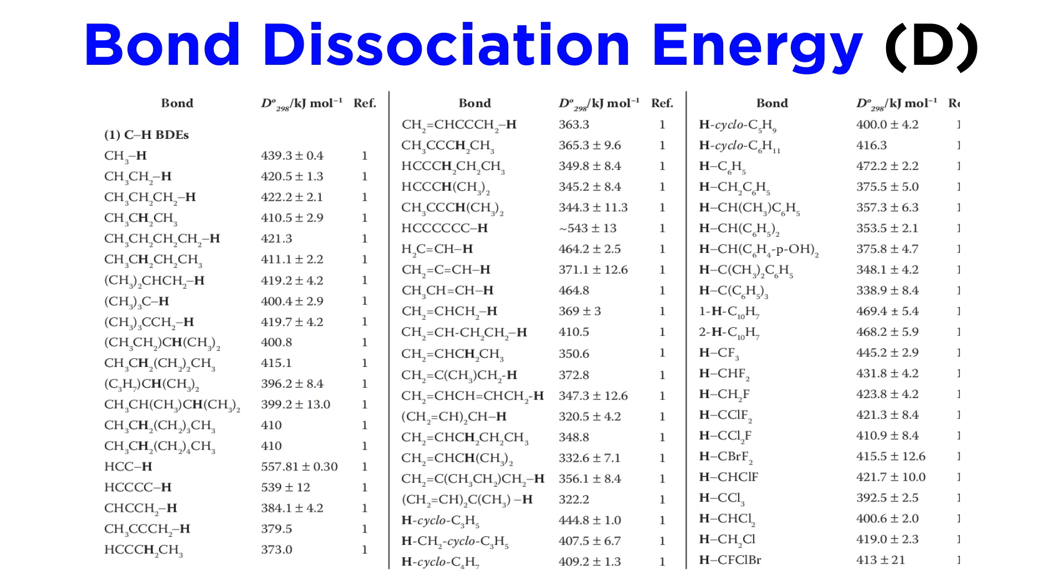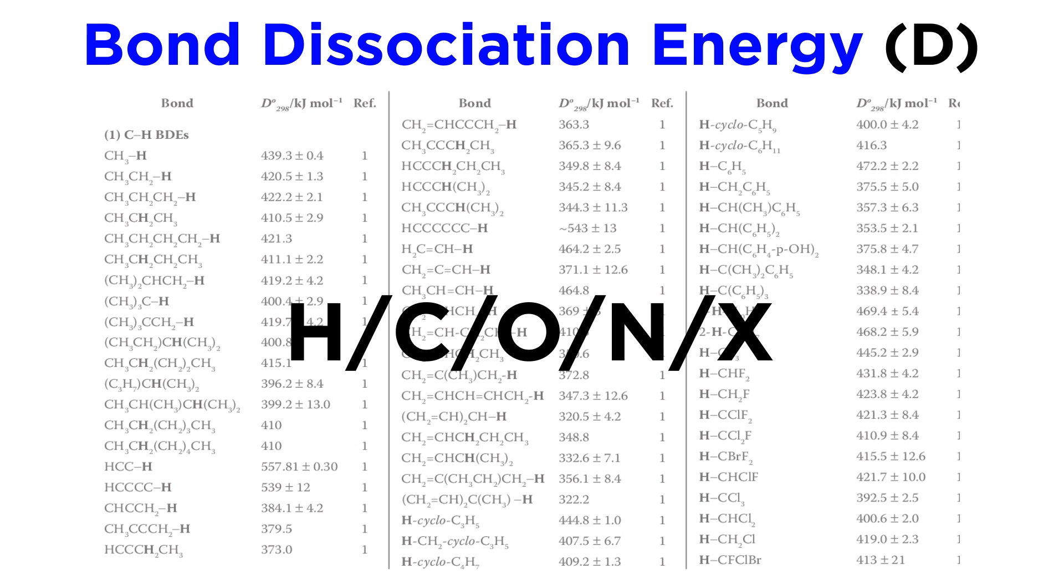Here we can see a table of bond dissociation energies for a wide variety of functional groups. These will span a wide range of energies, and will depend heavily on the elements involved, whether those are hydrogen, carbon, oxygen, nitrogen, halogen, or otherwise.